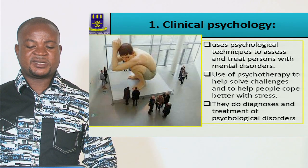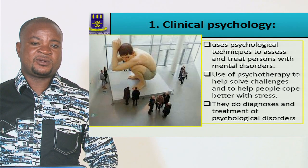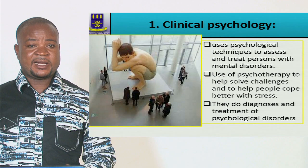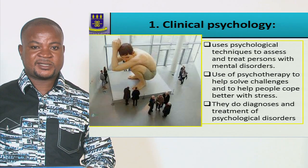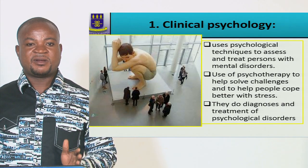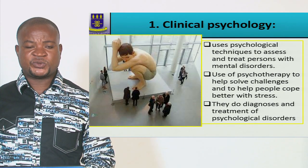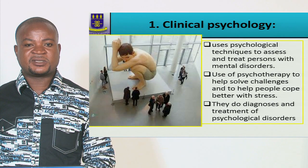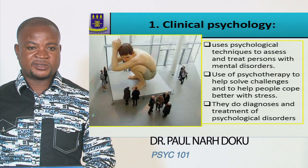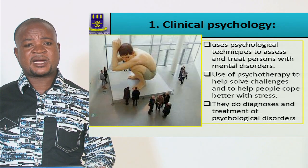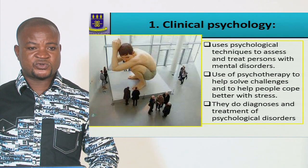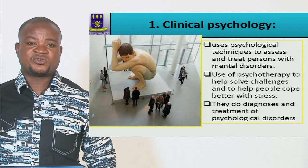There is an important distinction between a clinical psychologist and a psychiatrist. A clinical psychologist has all their training in psychology and uses psychological principles to treat people with psychological disorders. A psychiatrist, however, is a person who first trained as a medical doctor and then came for specialized training in psychological issues — and may use medicine to treat people with psychological conditions because of their medical background.